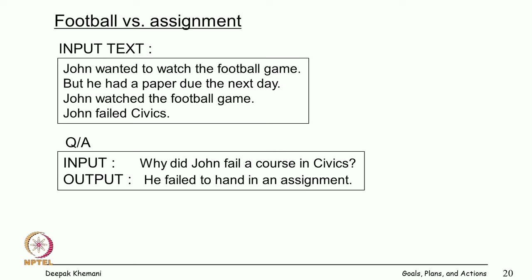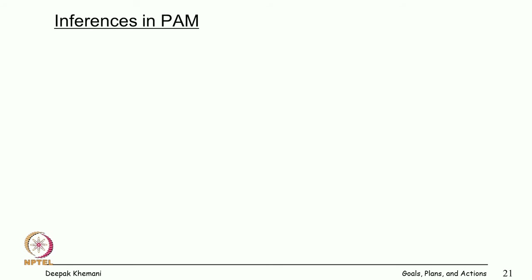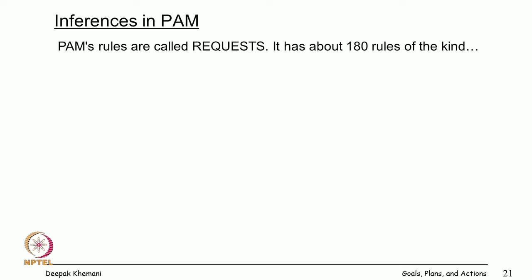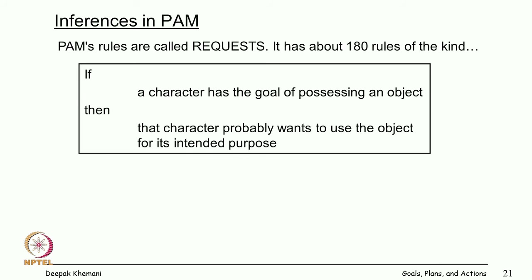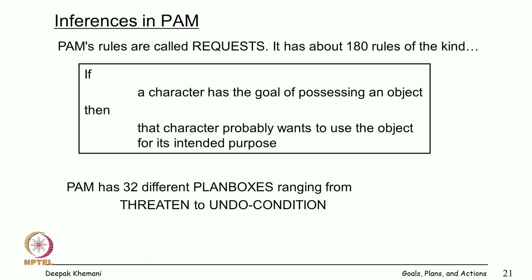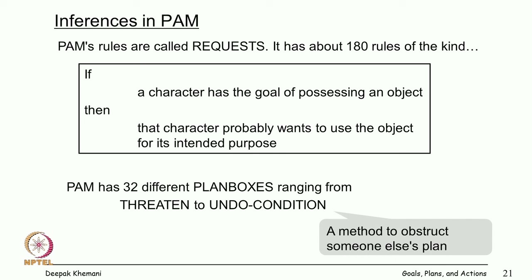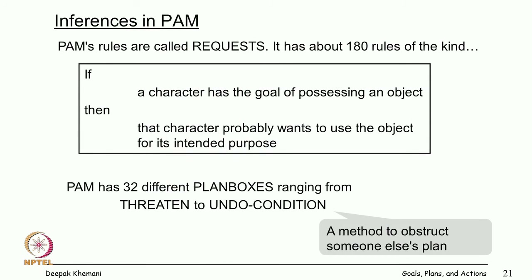Another story: John wanted to watch the football game but he had a paper due the next day. He won the football game and he failed civics. PAM can infer that he failed to hand in the assignment. Inferences in PAM are made by rules — this group at Yale called their rules 'requests.' It has about 180 rules of this kind, for example: if a character has a goal of possessing an object, then the character probably wants to use that object for its intended purpose. PAM has 32 different plan boxes, ranging from 'threaten' to 'undo condition.'